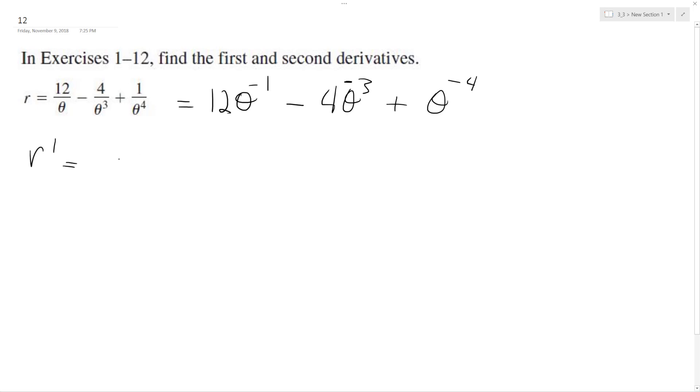So r' is just going to be negative 12, and then theta goes to negative 2, minus, we're bringing down negative 3, so it becomes plus, because it's negative 3 times 4, and then minus a negative. It's positive, 12 theta raised to the negative 4th, and then over here, minus 4 theta raised to the negative 5th.